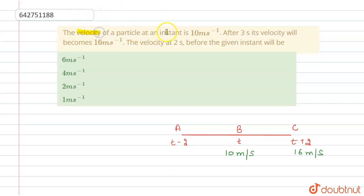The velocity of a particle at an instant is 10 meters per second. After 3 seconds, its velocity will become 16 meters per second. So the velocity of the particle is 10 m/s at point B, and after 3 seconds, velocity becomes 16 m/s at point C.